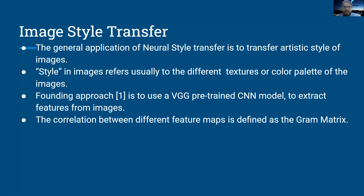Image style usually refers to the different textures or color palettes of an image, and the founding approach that introduced this method used a VGG pre-trained CNN model to extract features from images.